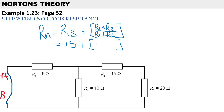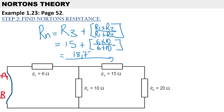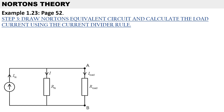R1 is 6 ohms multiplied by R2 = 10 ohms, over (6 plus 10). This gives us Norton's resistance of 18.75 ohms.